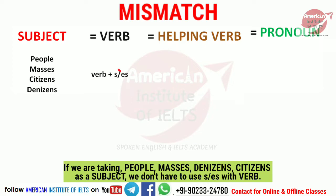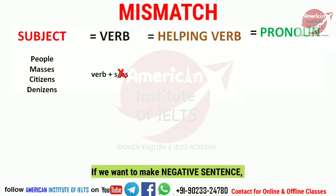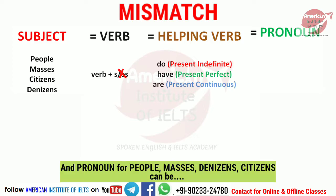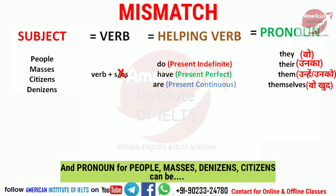And if you want to make a negative sentence, in present indefinite tense you use 'do', in present perfect tense 'have', and in present continuous tense 'are'. For 'people' and similar plural subjects, the pronouns to use are: 'they' meaning 'wo', 'their' meaning 'unka', 'them' meaning 'unhe', and 'themselves' meaning 'wo khud'.